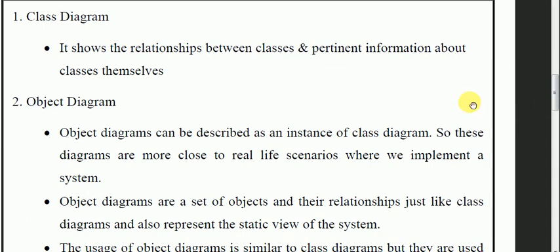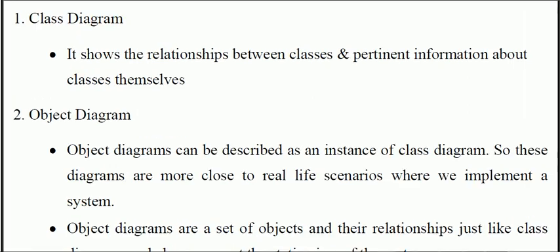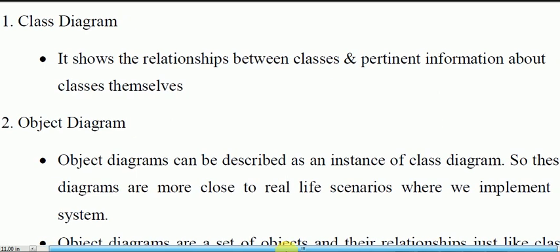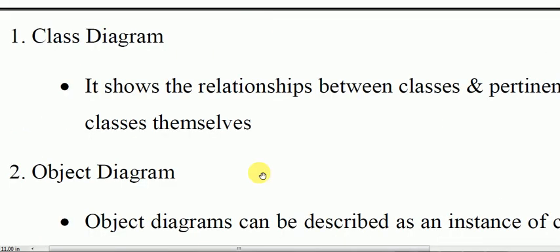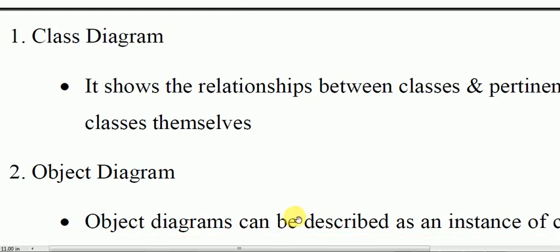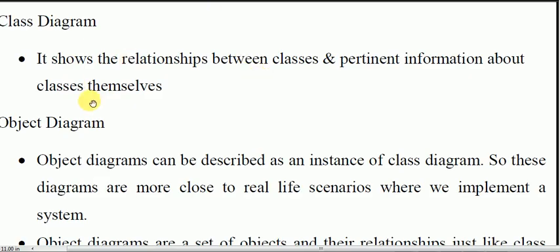Let's go through the definitions of these different kinds of diagrams. Class diagram — this is the structural diagram. The class diagram shows the relationship between classes and pertinent information about the classes themselves.